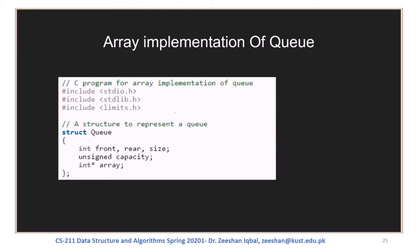Let's look at the implementation. We have the standard header files needed. Then there is a structure queue with three elements: front, rear, and size. Front and rear keep the values of the front and rear indices, and size keeps the count of elements currently in the queue. There is also a capacity variable which holds the actual capacity of the queue — for example, if the array has five elements capacity, and currently only two are stored, capacity equals five and size equals two.